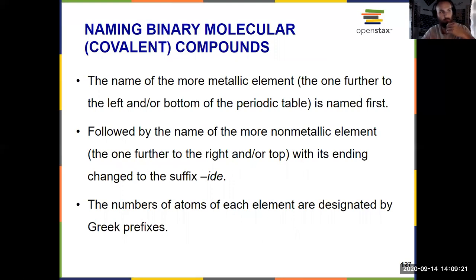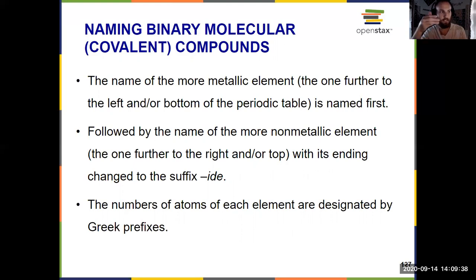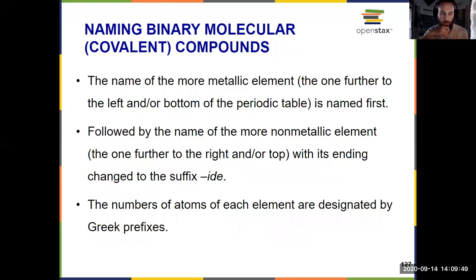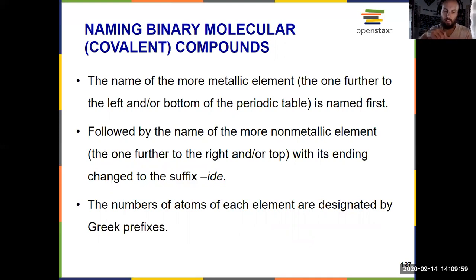We start by naming the thing that's more metallic — again, we're looking at binary compounds and comparing two things. The one that's more metallic is either further to the left or further down the periodic table. That's the thing named first, followed by the one that's more non-metallic, going up and to the right. The non-metallic element again gets the -ide ending. The difference here is that the number of each atom has to be designated using Greek prefixes.